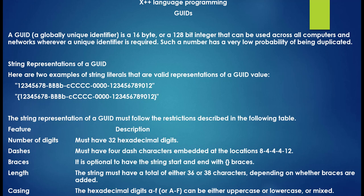Let's see another data type in the programming language — what we call a GUID. A GUID, or globally unique identifier, is a 16-byte or 128-bit integer that can be used across all computers and networks wherever a unique identifier is required. Such a number has a very low probability of being duplicated, so whenever we require a very unique identifier, we can use a GUID.